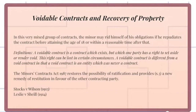A voidable contract is different from a void contract in that a void contract is an entity which was never a contract. The Minors Contracts Act 1987 restores the possibility of ratification and provides in Section 3 a new remedy of restitution in favour of the other contracting party. This remedy is discretionary, but cases such as Stocks v. Wilson from 1913 and Leslie v. Sheild from 1914 illustrate the factors which will be taken into account.